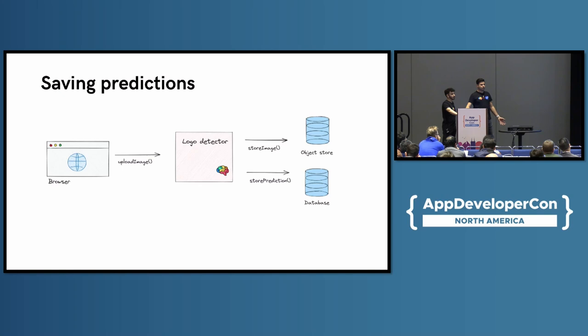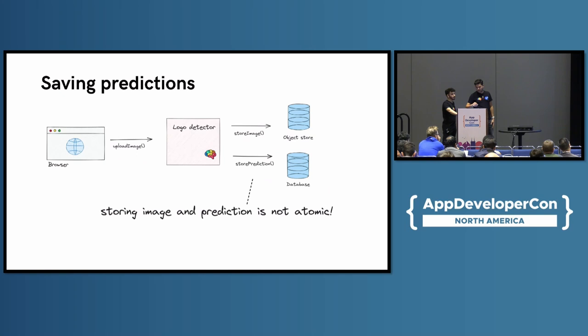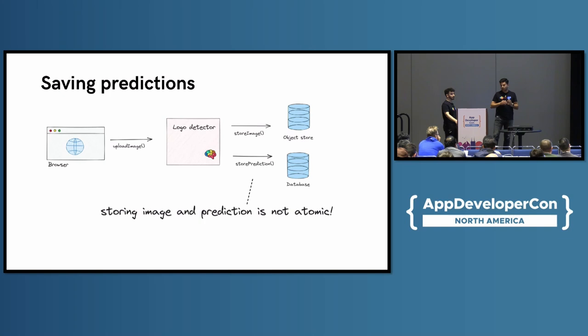The prediction is basically just structured text — could be XML, could be JSON, things like that. But here we have this issue: your Logo Detector system is actually talking to two systems and these operations are not atomic. They're atomic individually, but not atomic as a whole. So the store image operation could fail, and then you would end up with a prediction where you don't have the image. This is a very basic problem that we know from resiliency topics.